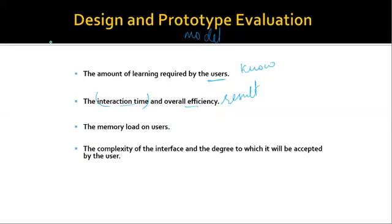The next criterion is the memory load on the user. One of the golden rules is to reduce the user's memory load. This is derived from the number of actions, tasks, and the system state — whether the user has to remember more or less. The next criterion is the complexity of the interface and the degree to which it will be accepted by the user. A user with good knowledge of technology can work on a complex system, whereas a user with minimal knowledge needs simpler software. This is derived from the interface style, help facilities, and how errors are handled.